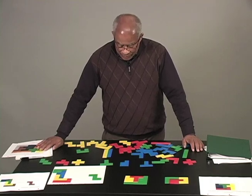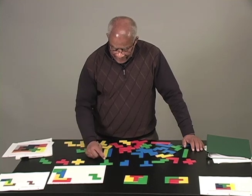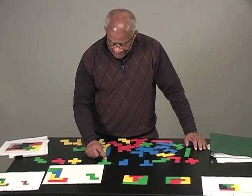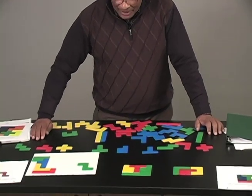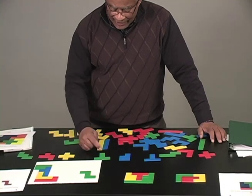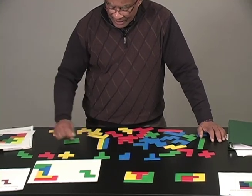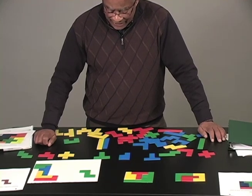First of all, it's worth noting that the pentominoes are made from five squares attached side by side. So the first problem is to determine how many pentominoes there are. That is, how many different ways are there of arranging five squares side by side? And there are actually twelve different ways of arranging them side by side.